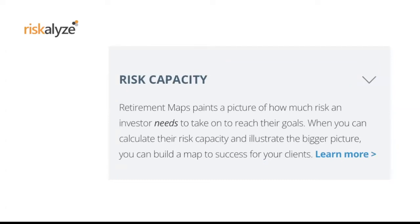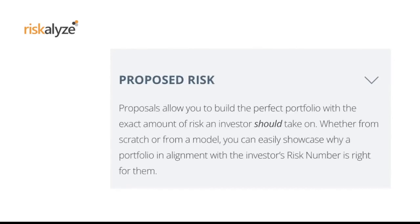Risk capacity: retirement maps paint a picture of how much risk an investor needs. Studies show that people managing their own money are emotionally challenged by the markets — they can't stand it when things go up and down. Today the market's down 550 points. I don't panic because it's just a percentage of a larger number. Had that number been 550 twenty years ago, you'd see all the news networks with doom and gloom. When you calculate risk capacity and illustrate the bigger picture, you can build a map to success. Proposals allow you to build the perfect portfolio with the exact amount of risk an investor should take on, and showcase why a portfolio aligned with an investor's risk number is right for them.